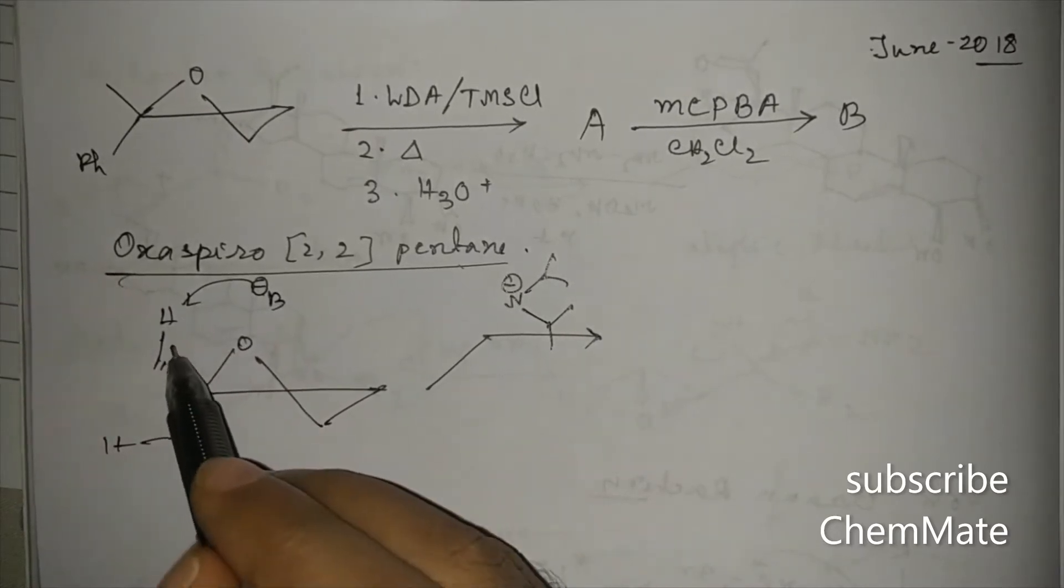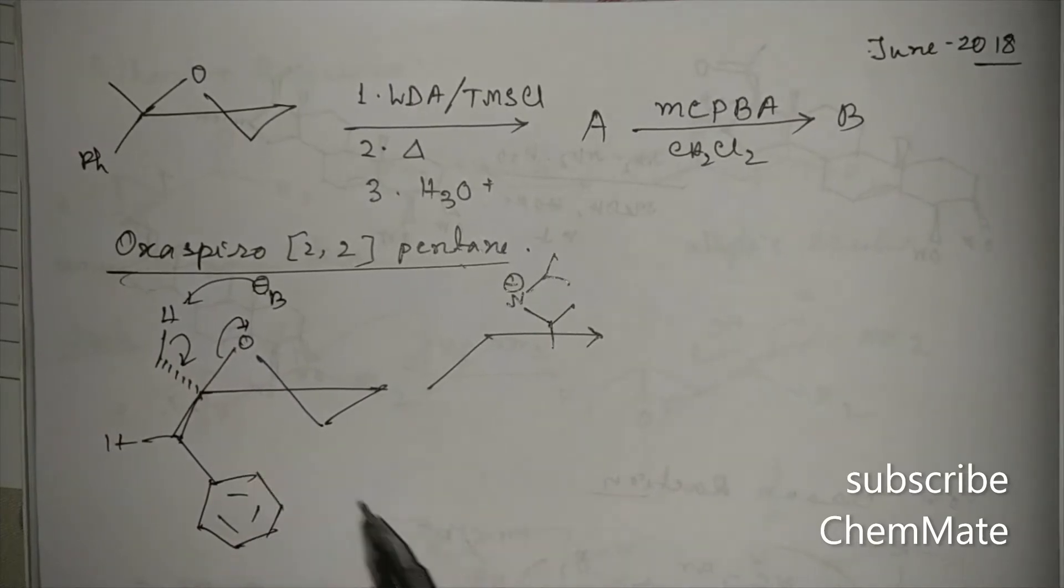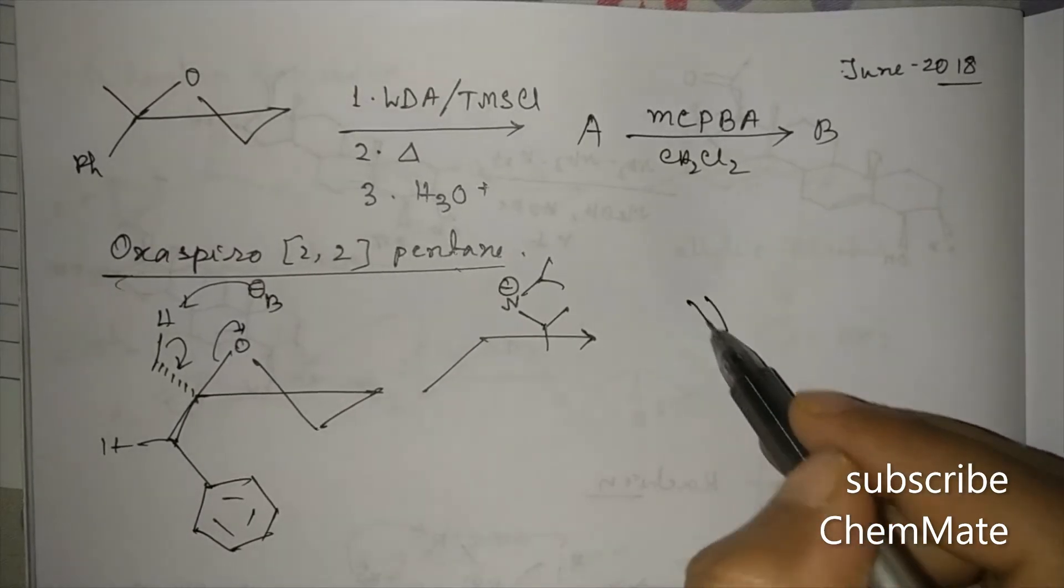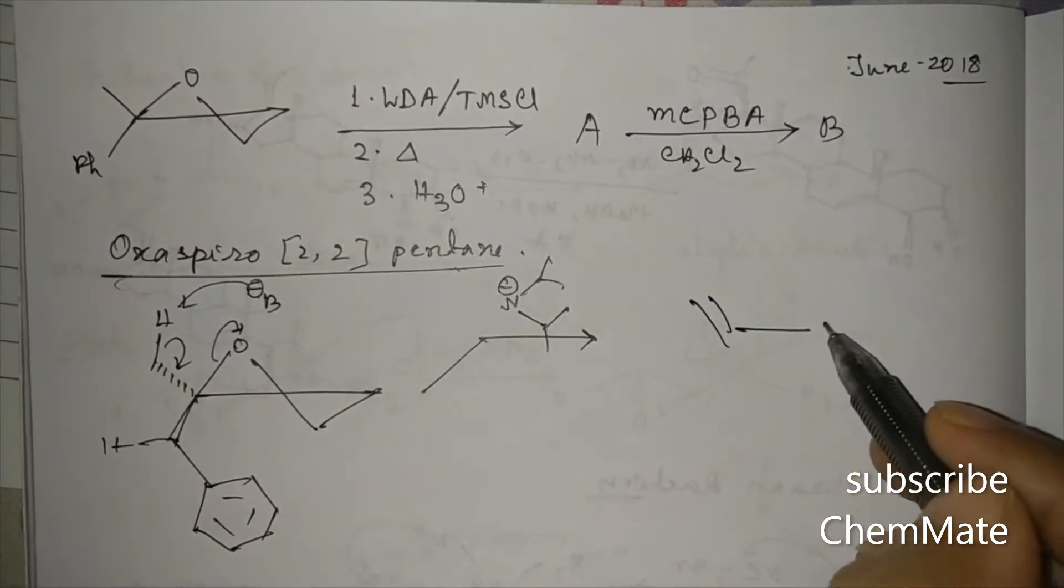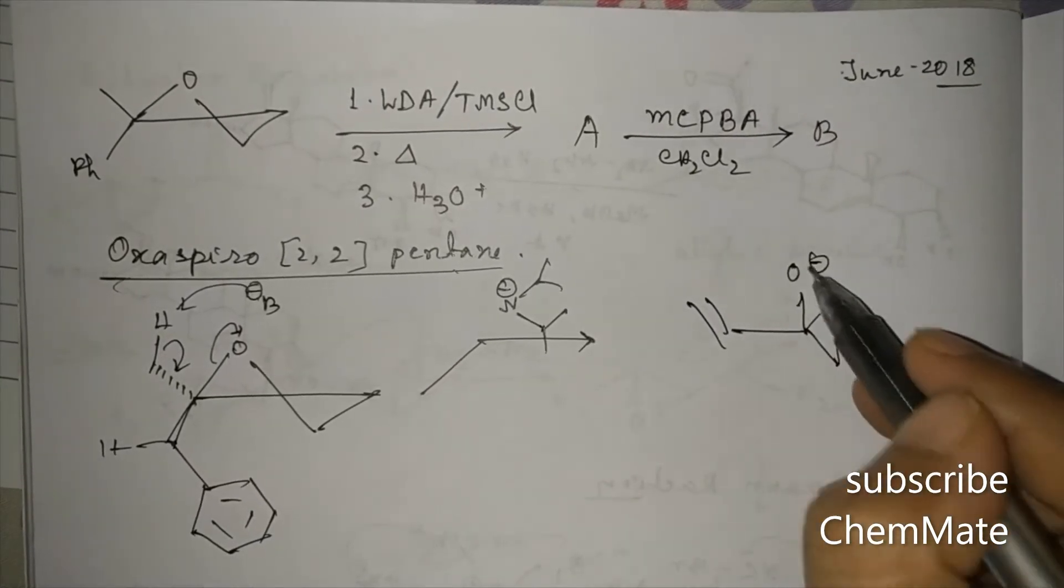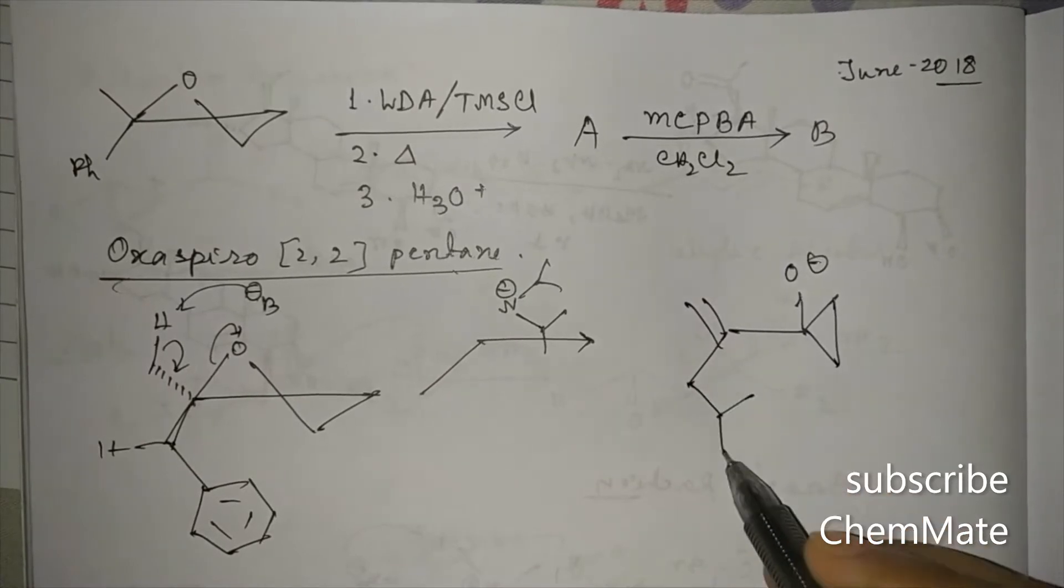Then it will abstract this proton, the proton from the less hindered side. So it will abstract this proton and this type of reaction will happen. So the product will be here, this is O-, and this will be the product.